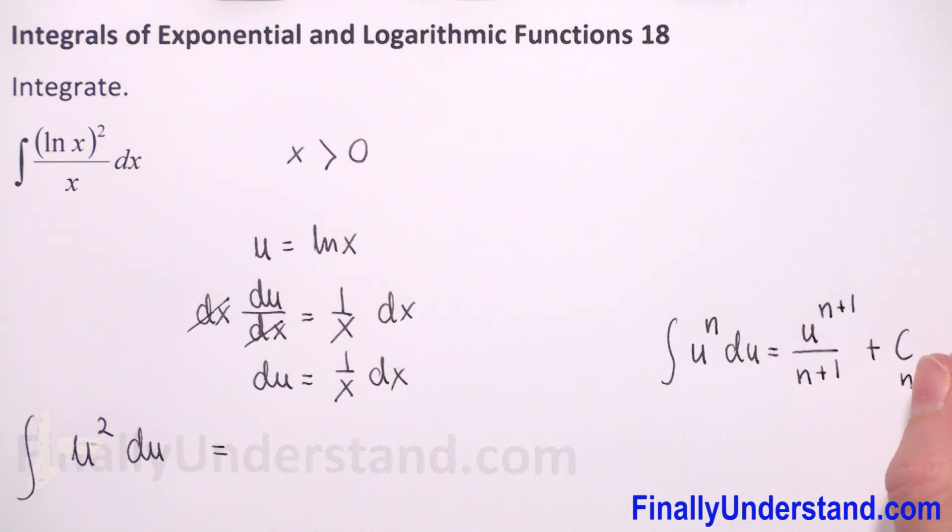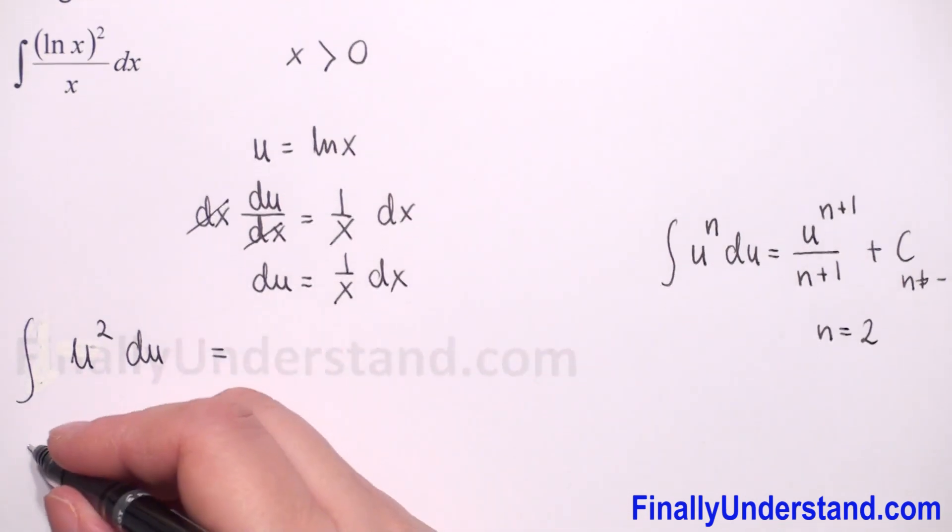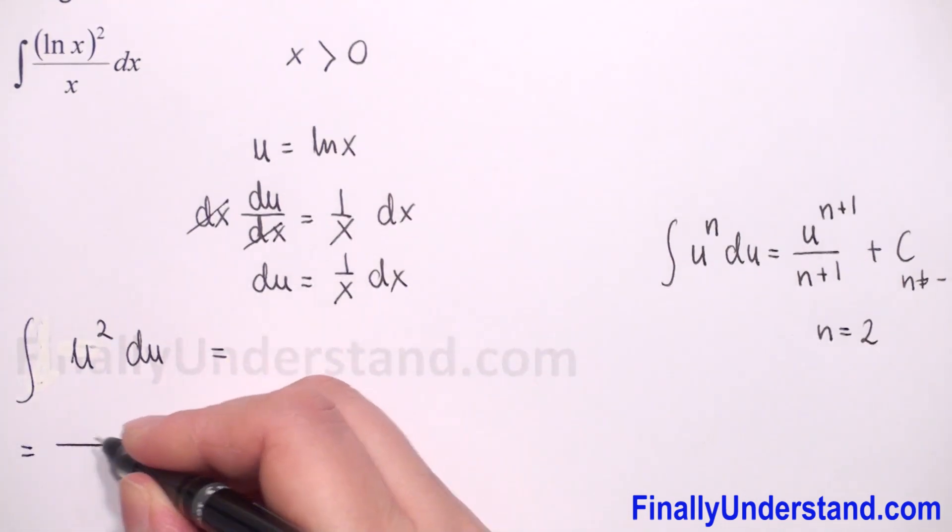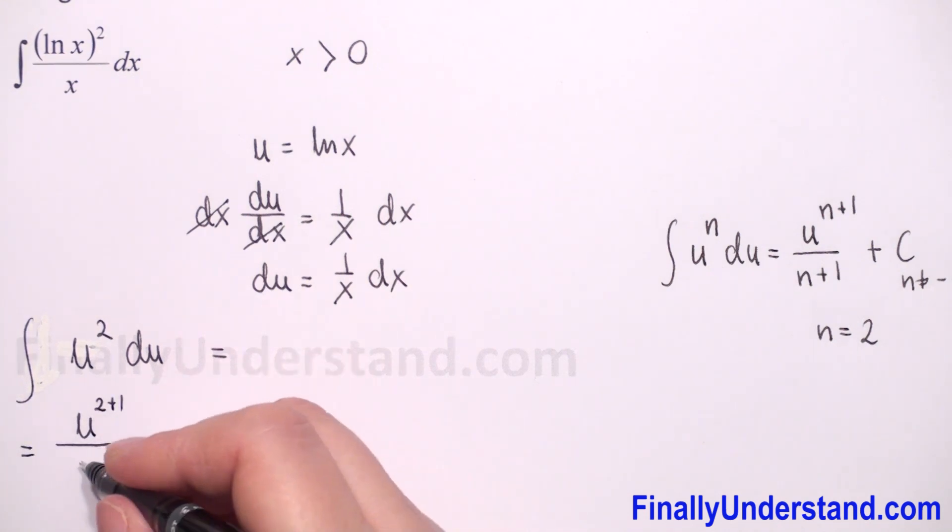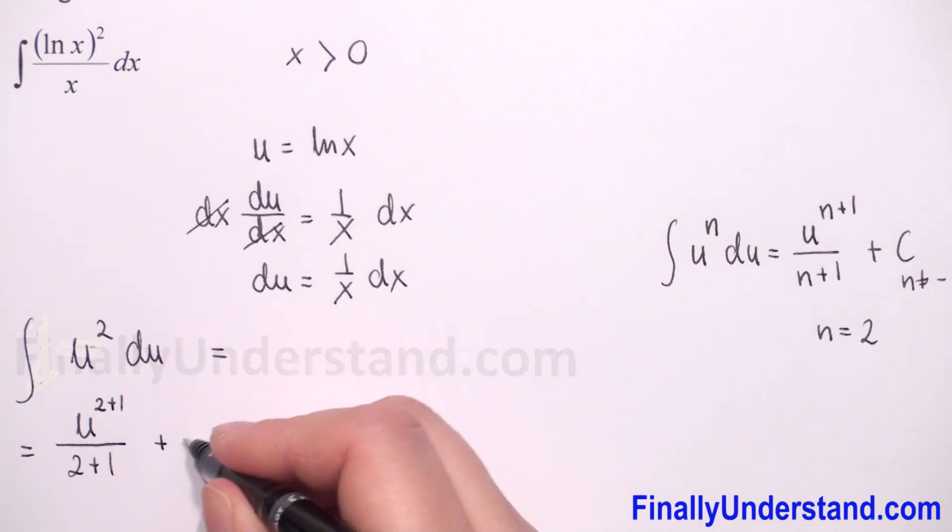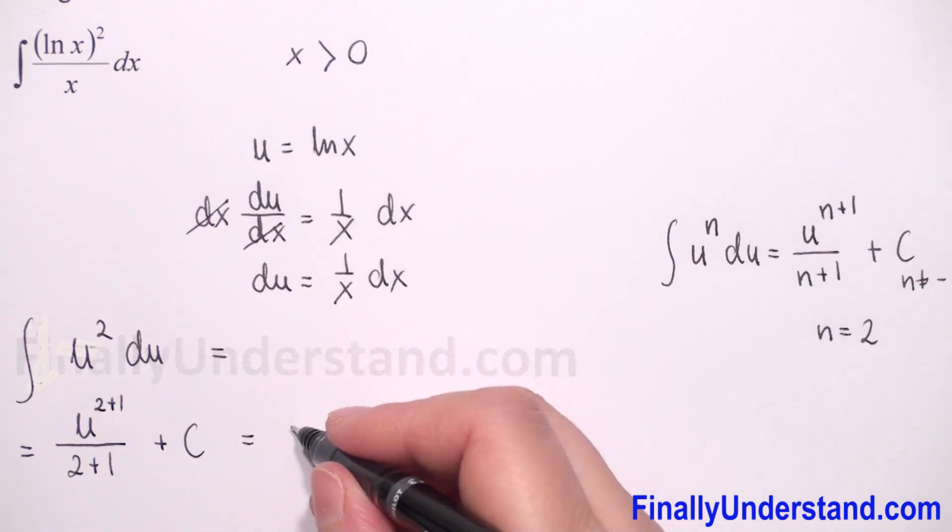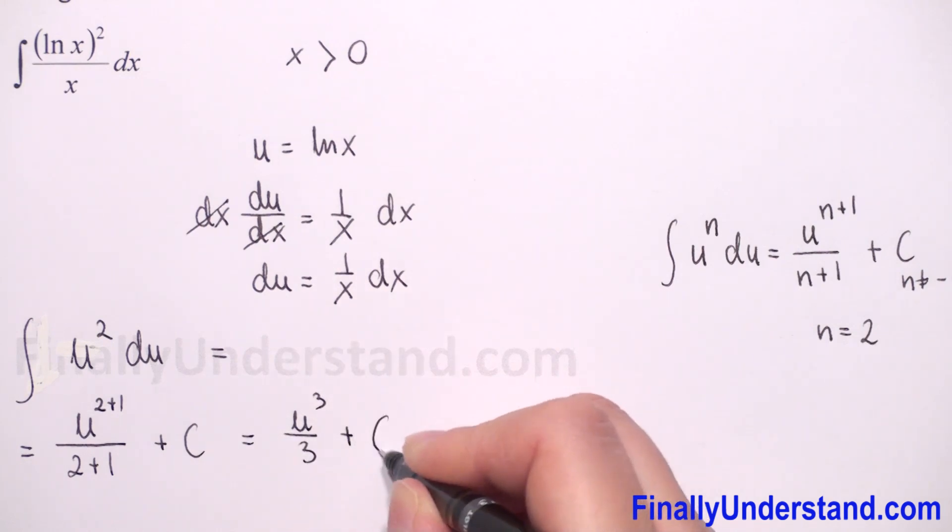This formula is for n different than negative 1. In this case, n is equal to 2, so we can use this formula. So we have in the numerator u to power 2 plus 1, in the denominator will be 2 plus 1, plus constant c. This is equal to u cubed over 3 plus c.